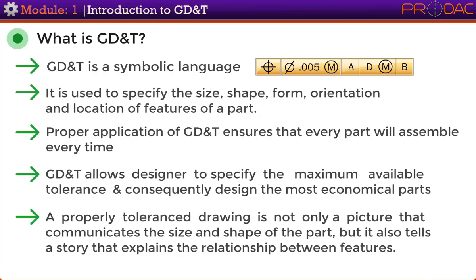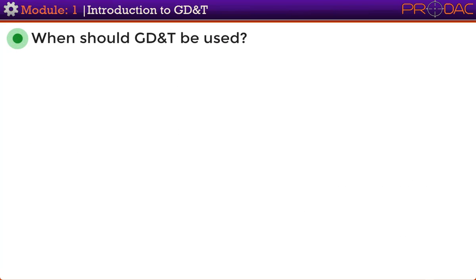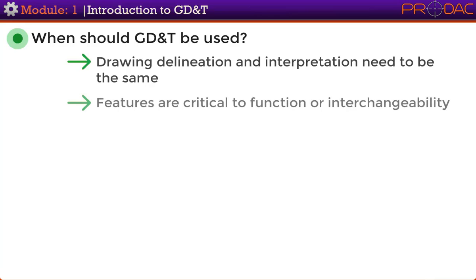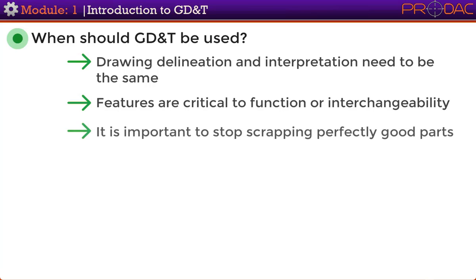Now we need to understand when to use GD&T — what are the cases which demand its use? The first case is when drawing delineation and interpretation need to be the same. The second case is when features are critical to function or interchangeability.